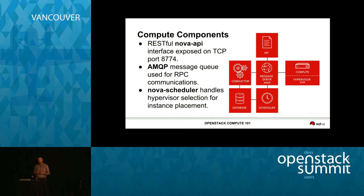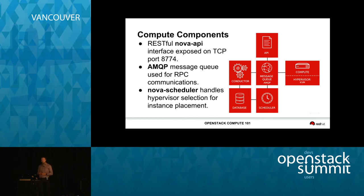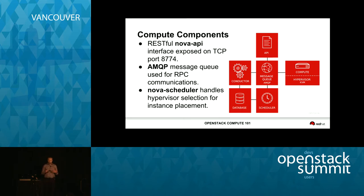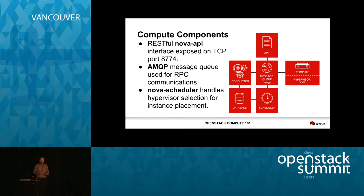Zooming in within the compute project, it's actually made up of a number of services, not a single service. At the top level we have our API service, Nova API, which exposes a RESTful interface for other components or users to talk with. There's also a provided Python client for interacting with that. All communication within the project is via an RPC message bus — most often RabbitMQ — used for communications between the different services.